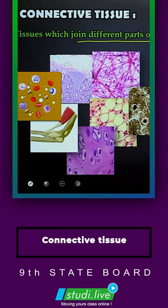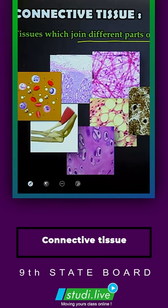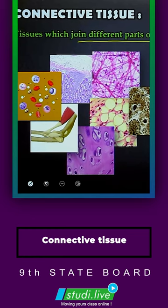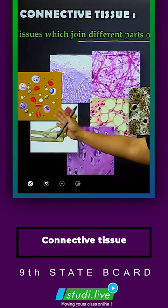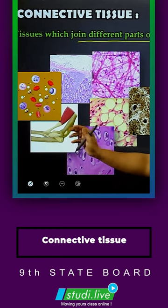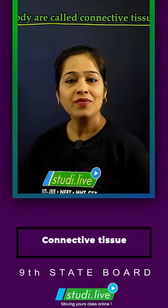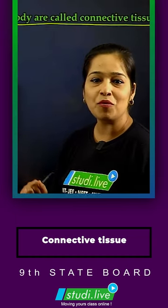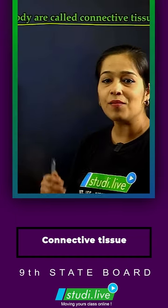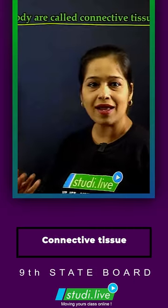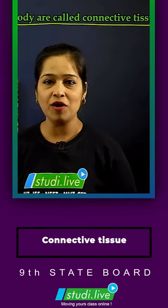There are many different connective tissues — we will see the diagrams and details about this. We can see over here that this is the blood, this is the joint, then we have cartilage, then we have tendons, then we have adipose, areolar. There are many different parts of the body.